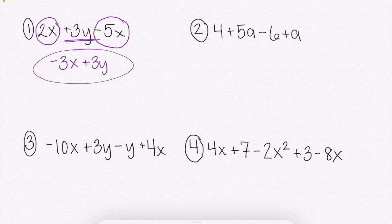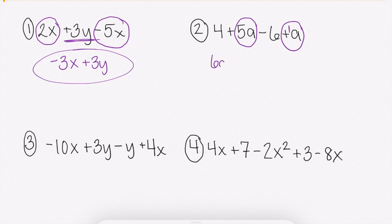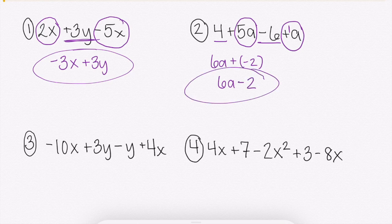Number 2, same thing, find your like terms. We have 5a and we have plus a, which if there's not a number in front, we know there's an imaginary 1 there. That's 1a. So 5a and 1a would get us 6a. Then I'm going to move on to my constants. Usually we start with any variables and then move on to our constants, which are just our numbers by themselves. I have 4 and a negative 6. So 4 plus negative 6 or 4 minus 6 would get us negative 2. You could write that as plus negative 2 or you could just write it as 6a minus 2. Those two things are the same thing. We don't know what a is, so we cannot simplify any further. And we don't know what it equals, so we can't solve for a. That's as far as we can go.